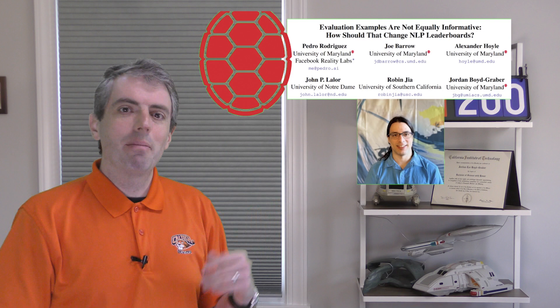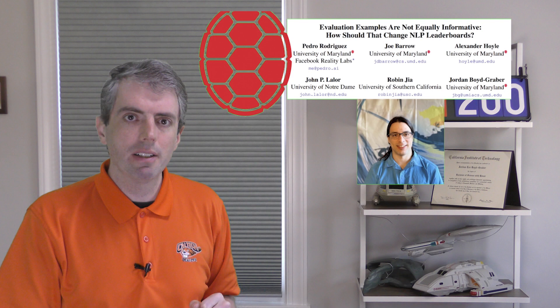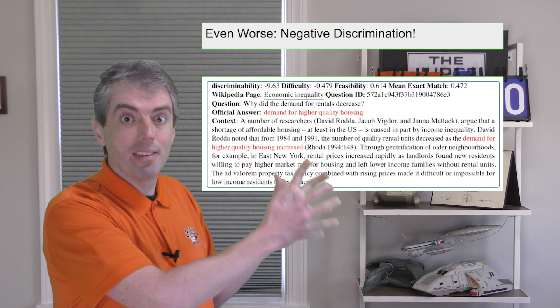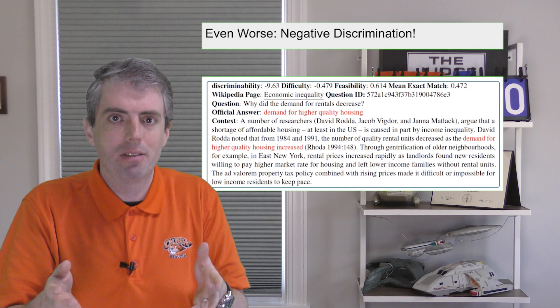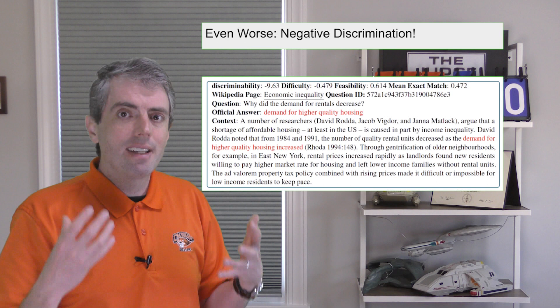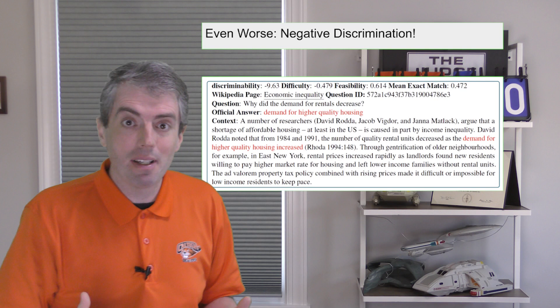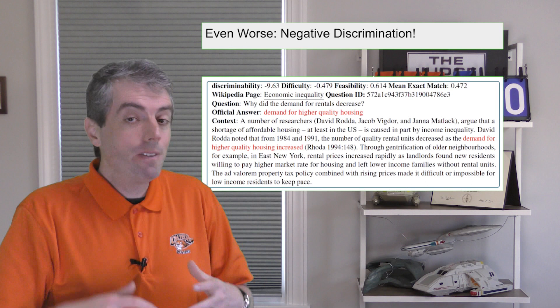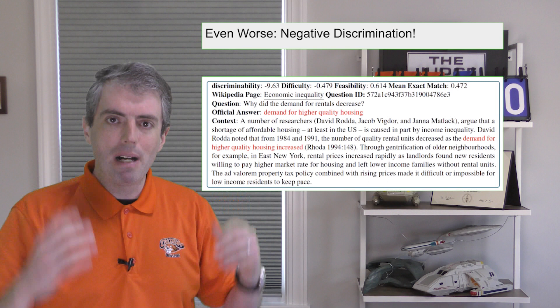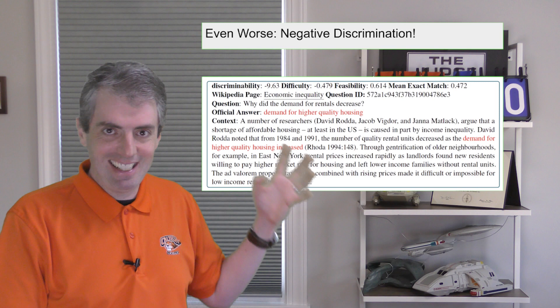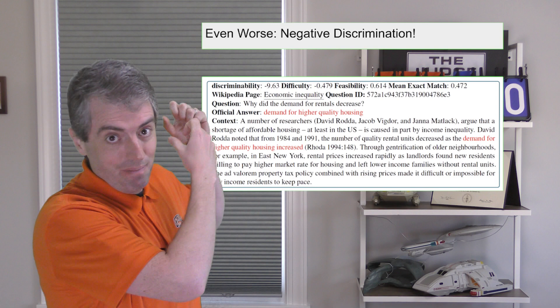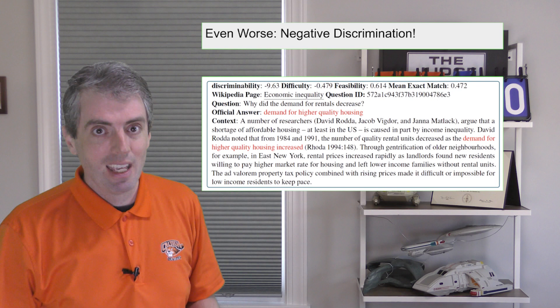Discrimination can also reveal problems in your dataset. Here's an example from SQuAD that we looked at in a paper — Pedro Rodriguez is the first author. As systems get smarter, they're more likely to get this question wrong. Gamma, the discriminability, is negative. This is a complicated question that's hard to answer with span selection. The question asks why the demand for rentals decreased, but this is a false presupposition — the demand didn't decrease, the supply decreased, due to the lack of a land value tax, restrictive zoning, NIMBY politics, and other factors. But if you're limited to the input-output paradigm of SQuAD, you can't say that sort of stuff.